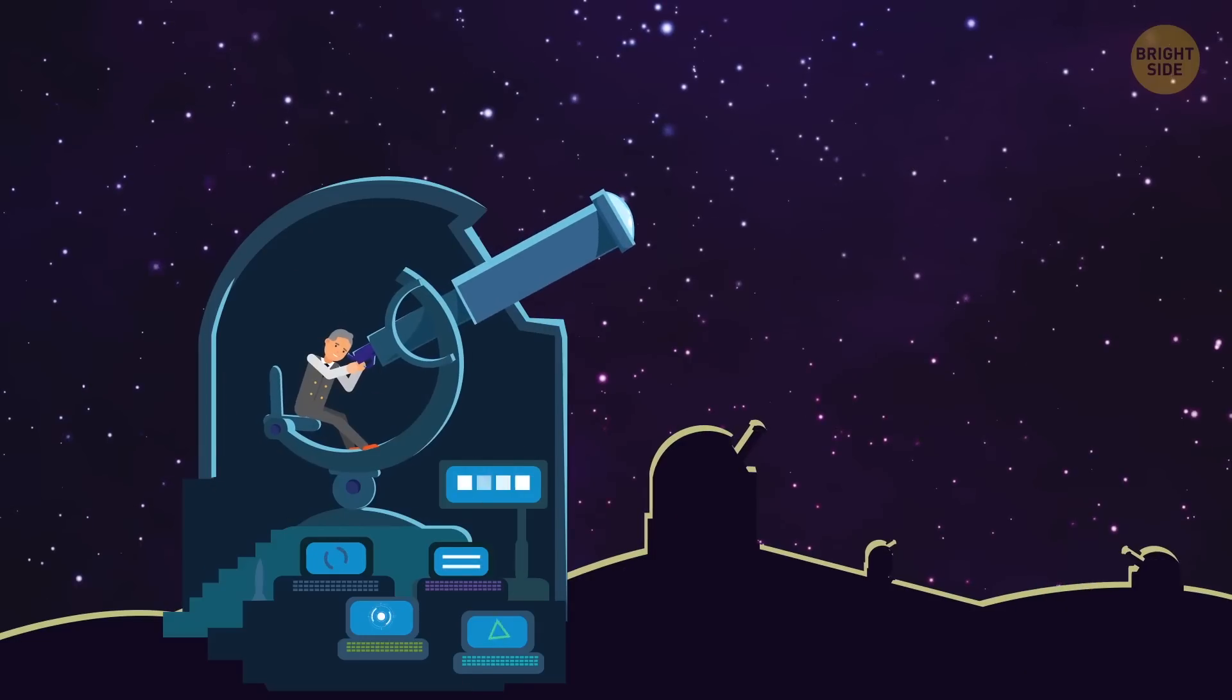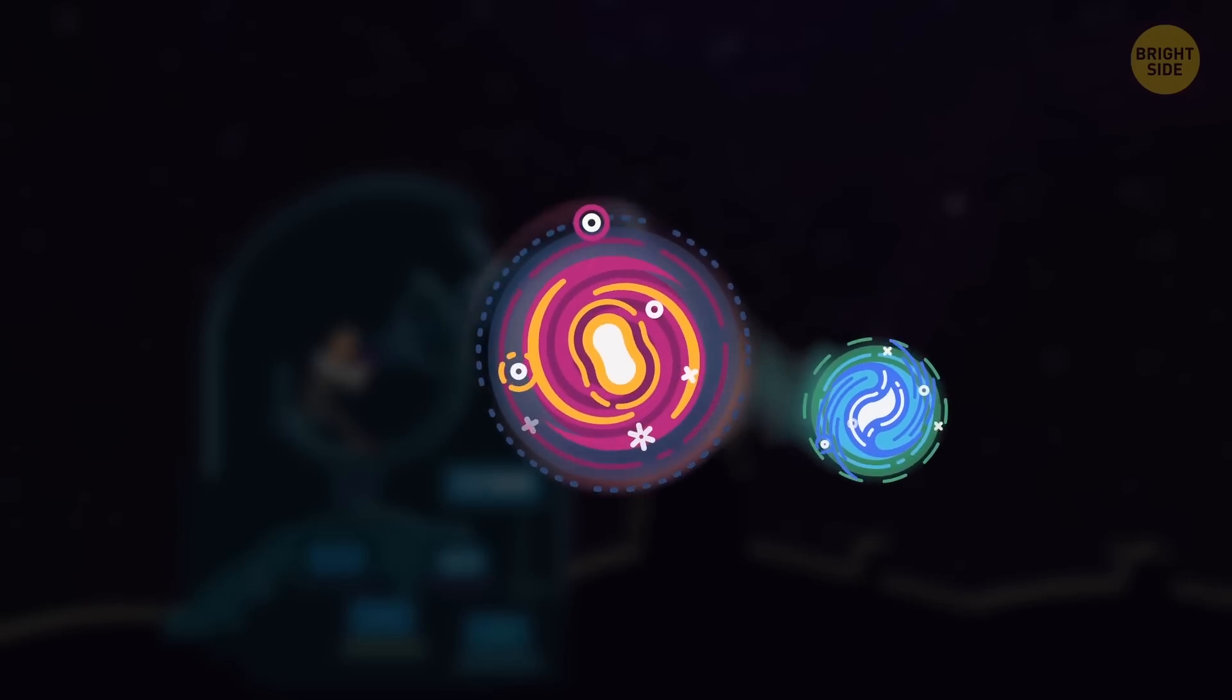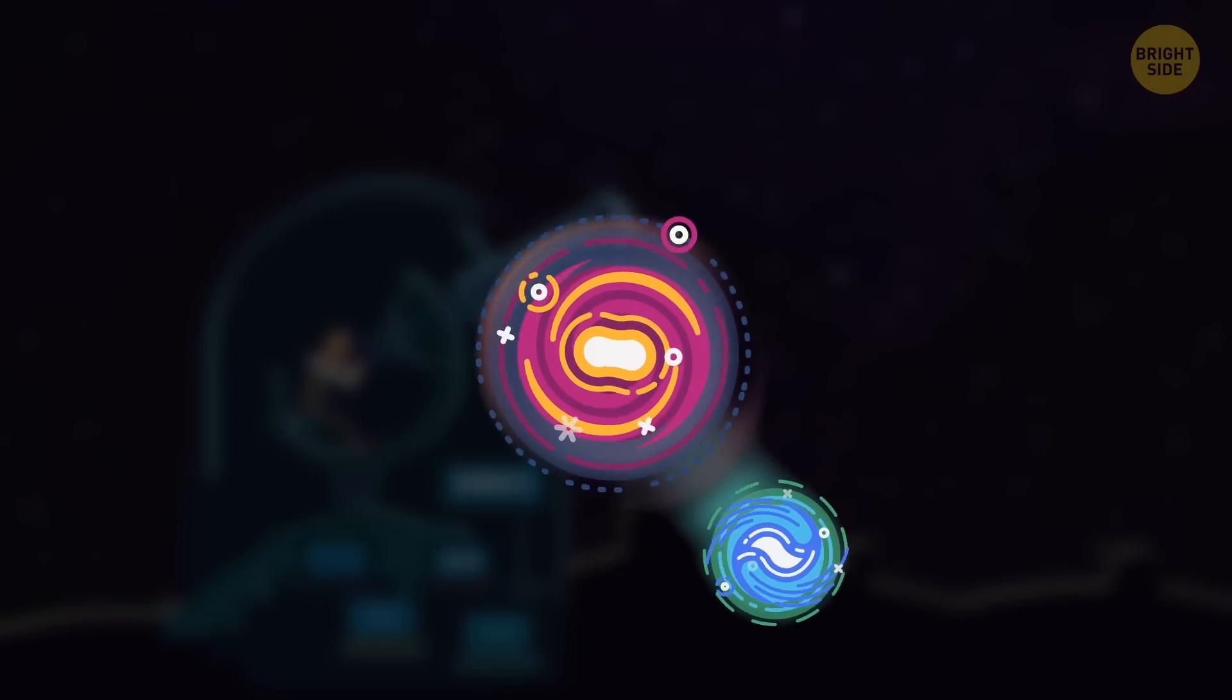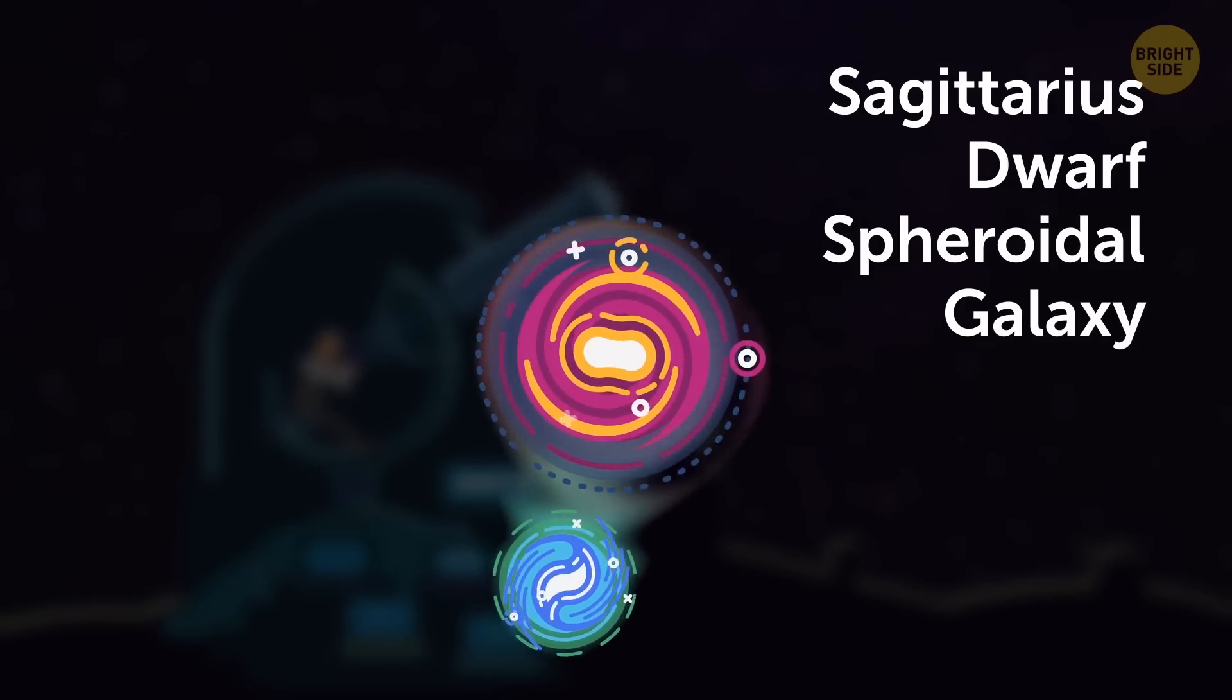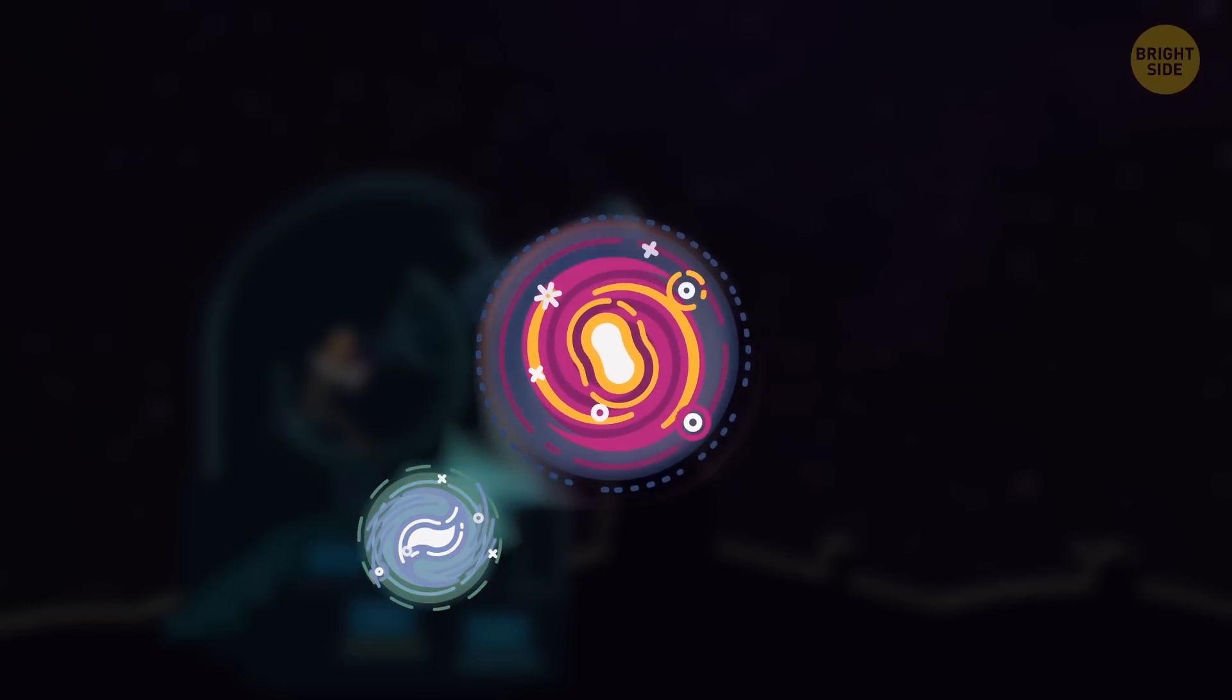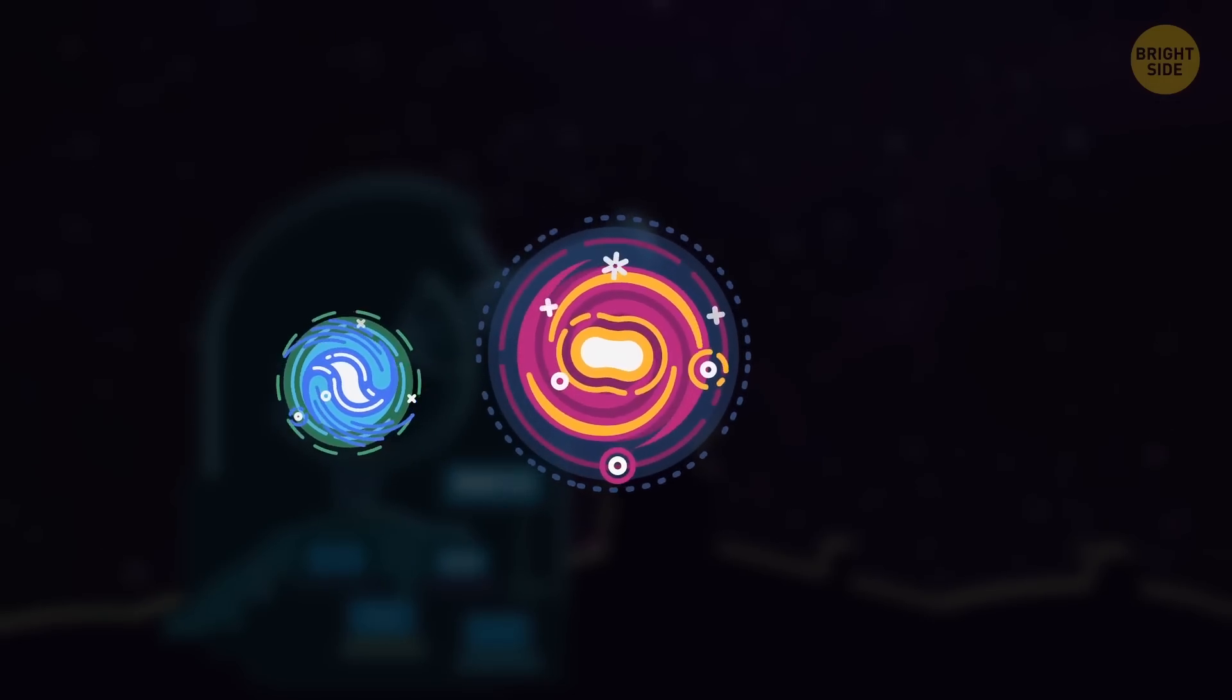Before this research, another group of scientists had stated that the agitations on the outskirts of the Milky Way resulted from our galaxy's interaction with another of its satellites, the Sagittarius Dwarf Spheroidal Galaxy. Whew, what a name! I'm not saying that again. But later, it turned out that the gravity of the long name I won't say galaxy wasn't strong enough to cause the ripples or influence our galaxy in any other way.